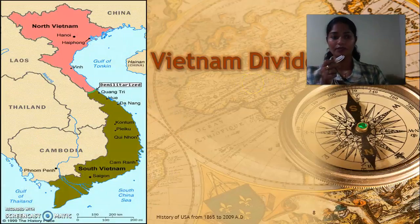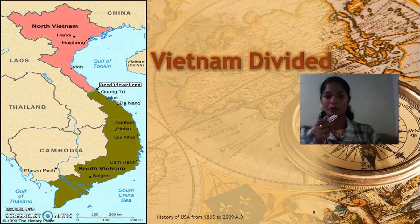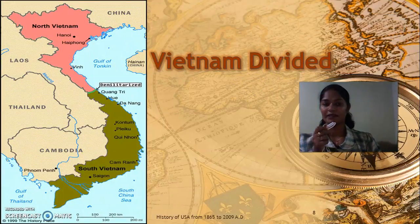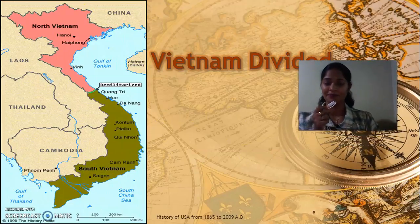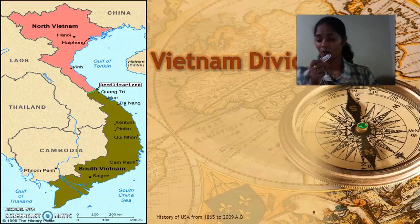This is a map of divided Vietnam. The pink portion is North Vietnam and the green one is South Vietnam. Let us see how this division came about.